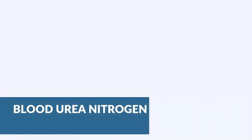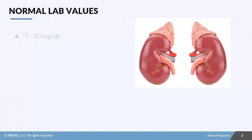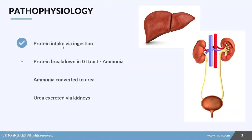In this lesson we're going to talk about blood urea nitrogen, or BUN. When we talk about BUN, we're looking at a lab that is primarily directed at the kidneys. The normal value for BUN is going to be 7 to 20 milligrams per deciliter.